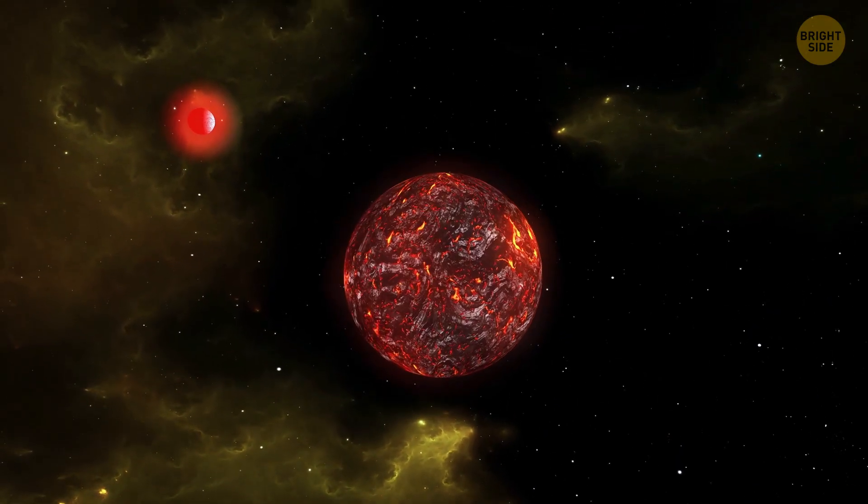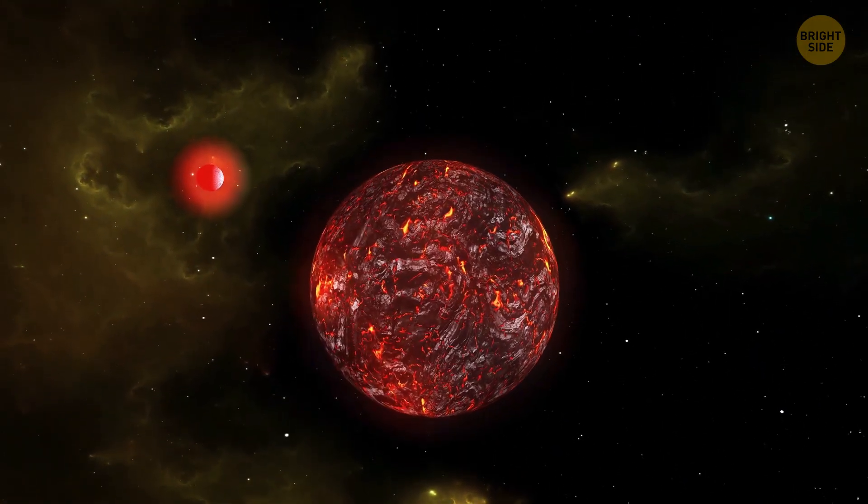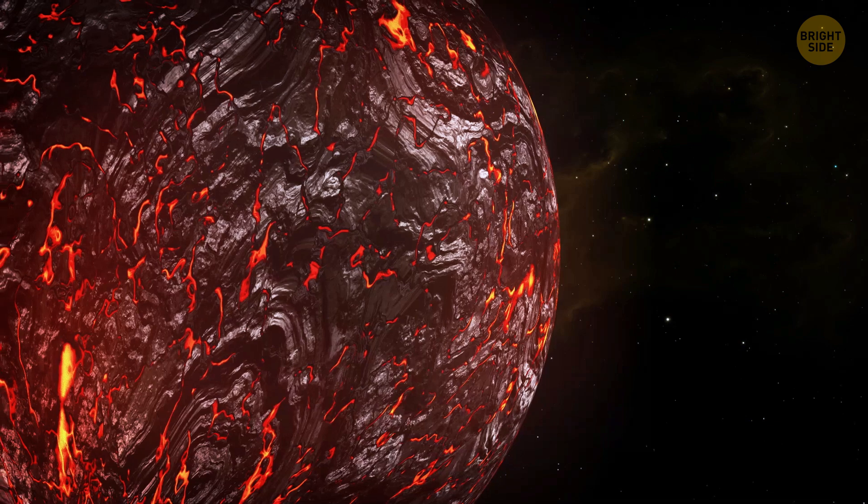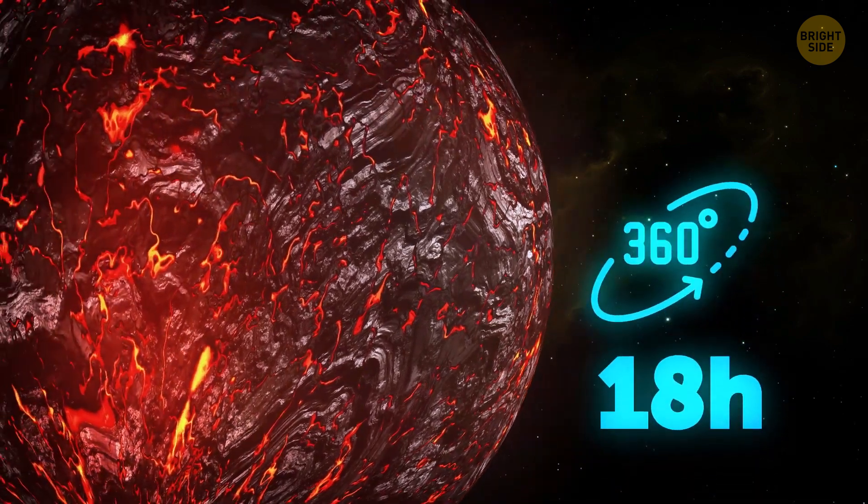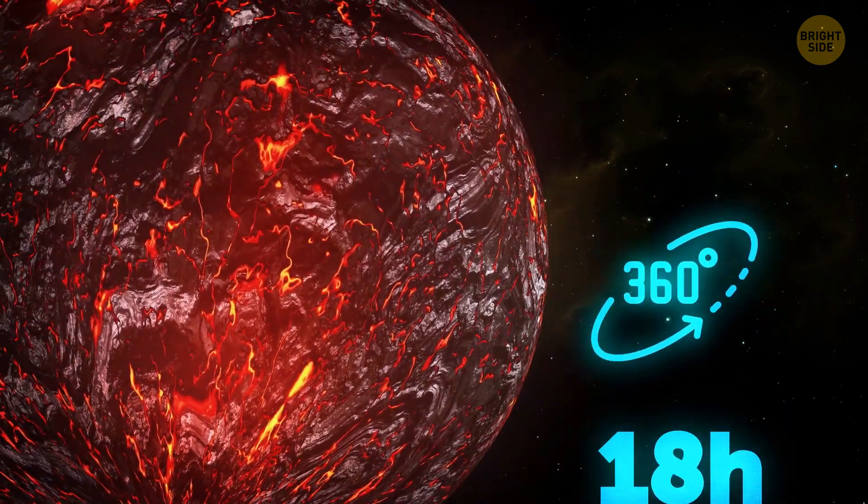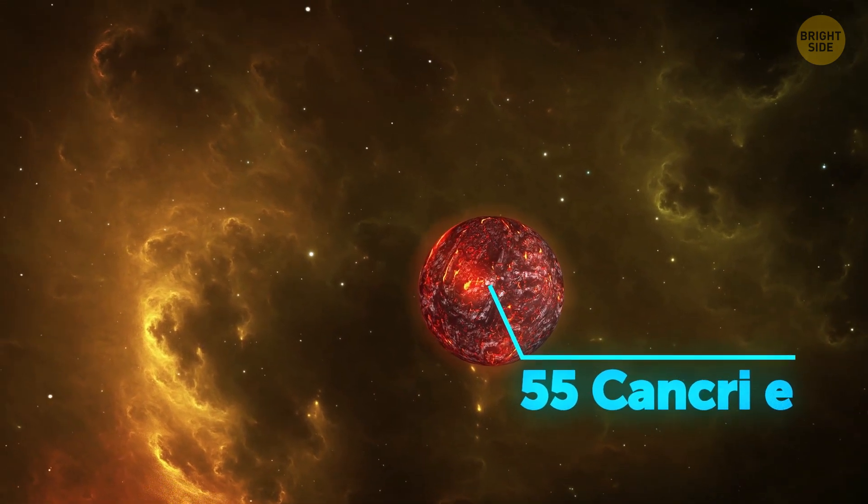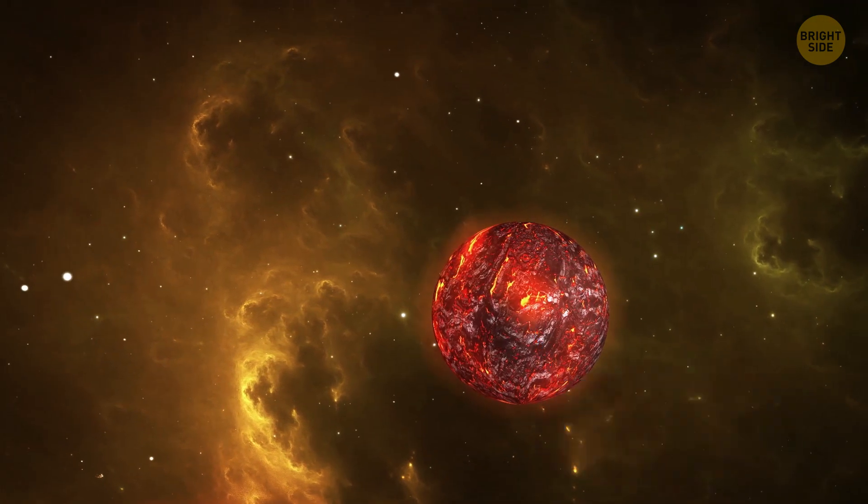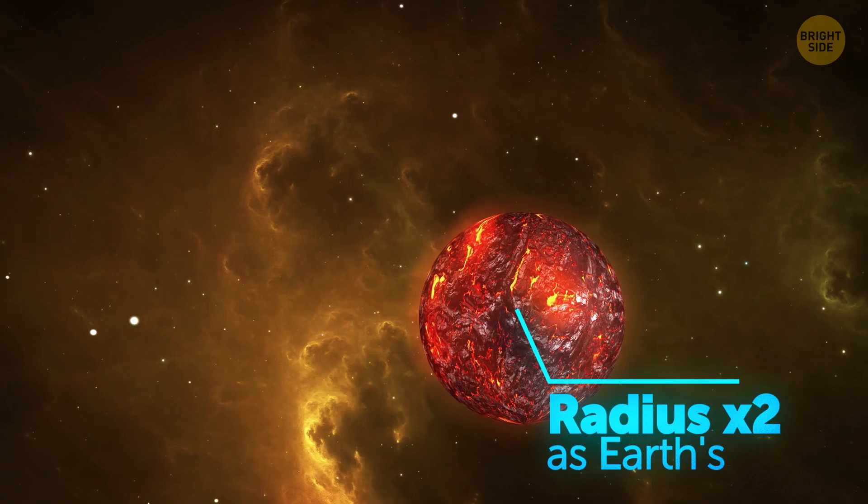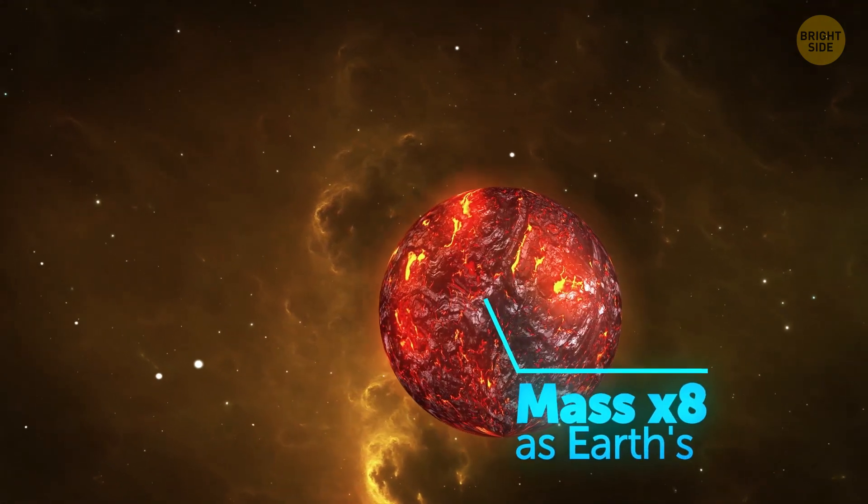There is a diamond planet out there that orbits a star in the constellation of Cancer, completing one full rotation in a mere 18 Earth hours. The planet's scientific name is 55 Cancri e. The radius of this faraway world is twice as large as Earth's, and its mass is 8 times greater.